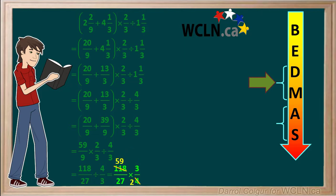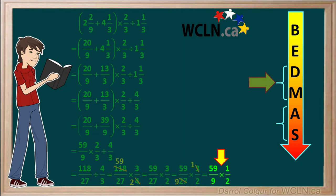The diagonals 118 and 4 can both be divided by 2 to give us 59 and 2. Now we have 59 over 27 times 3 over 2. The other diagonals 3 and 27 can both be divided by 3 to give us 1 and 9. So the question now is 59 over 9 times 1 half.